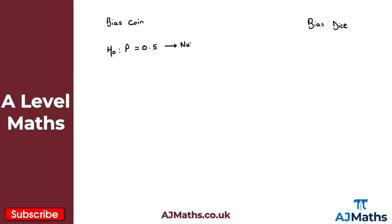That is the null hypothesis — this is what we assume to be correct. Then we have H1, the alternative hypothesis. It uses the same parameter p. If we're looking at a biased coin and assuming tails is biased, we'd expect the probability to be greater than 0.5. That is the alternative hypothesis.